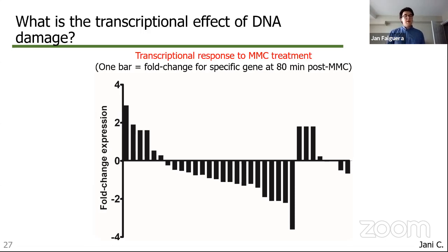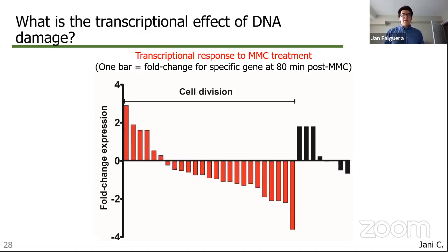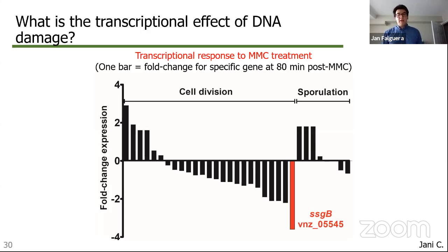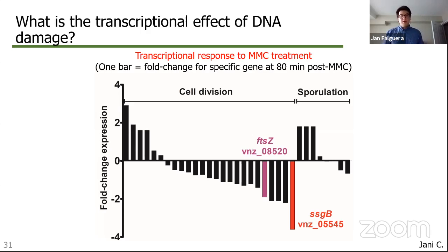We grew Streptomyces venezuelae in liquid cultures until they approached sporulation, then treated them with mitomycin C and extracted their RNA to assess how transcription was changing. From the resulting dataset, we saw an interesting observation: genes involved in cell division were all fairly downregulated compared to sporulation genes, which showed only a subtle effect. One gene in the cell division category, named SSGB, appeared to have the highest downregulation — about four-fold — over the 80-minute time course, compared to the central cell division gene FtsZ which showed only two-fold downregulation. This strongly suggested an effect of DNA damage on SSGB expression.